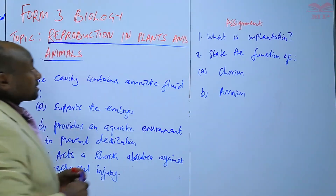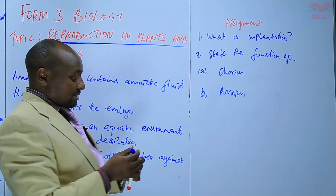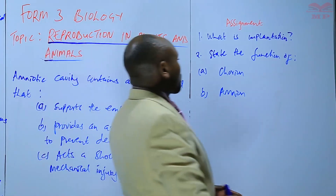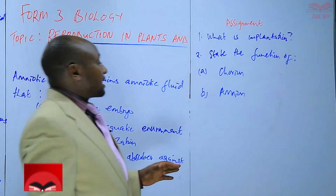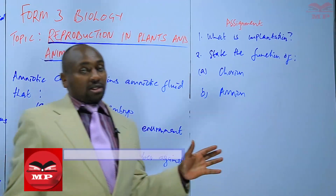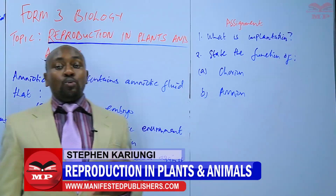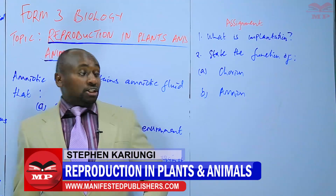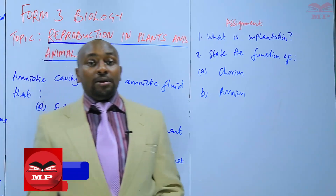For the assignment, the first question is: what is implantation as we have discussed it? And second, state the functions of the chorion and the amnion. Those are the layers initially formed within the embryo after implantation. We'll stop there until next time. Goodbye.